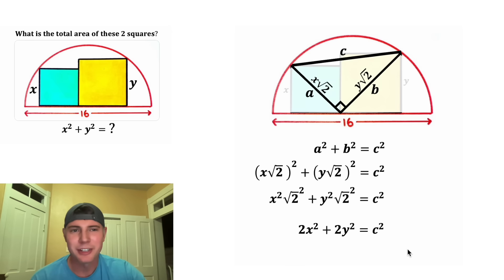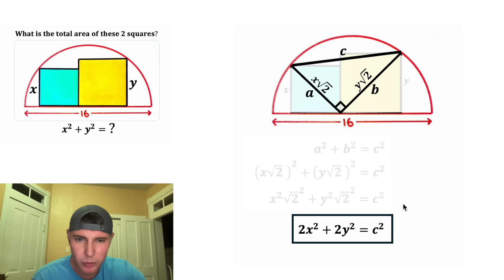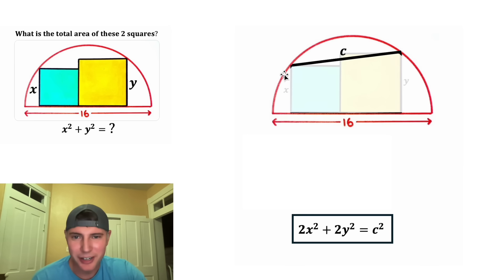This looks important. Let's put a box around it. And we're not going to need this work anymore, nor will we need the diagonals. But let's leave the c right here.